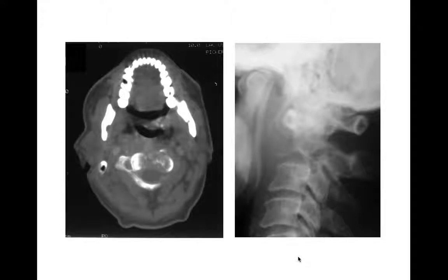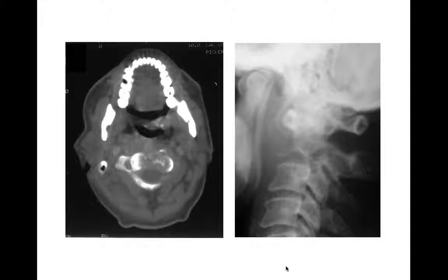Here's an example of a giant cell tumor — a lytic lesion involving C2, not well seen on radiograph but better on CT. This one may have some internal matrix, making osteoblastoma a good thought here too. Giant cell tumors are found in vertebral bodies, and this one ended up being a giant cell tumor. ABC is also reasonable to consider. In an older patient, don't forget mets and multiple myeloma.